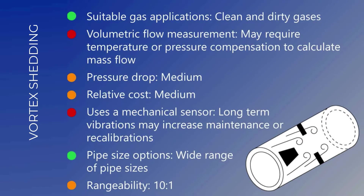Vortex flow meters place an obstruction in the path of the gas flow to create a swirling of the gas. The pressure variations caused by the swirling effect are measured by a sensor or sensors placed after the obstruction. Vortex shedding flow meters are suitable for clean and dirty gas applications, provide volumetric flow measurement, and may require temperature or pressure compensation to calculate mass flow. They have a medium pressure drop, a moderate relative cost, use a mechanical sensor, and long-term vibrations may increase maintenance or require recalibration. They are available in a wide range of pipe sizes and have a rangeability of 10 to 1.